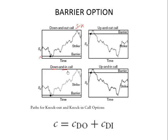In a down-and-in call, the option comes into existence if the spot price hits a barrier on the downside. So in a down-and-out call, the option went out of existence if the downside barrier was hit. In a down-and-in call, the option comes into existence if that downside barrier is hit. The payoff at maturity would then be S minus K. If the barrier is not hit, the option never comes into existence.